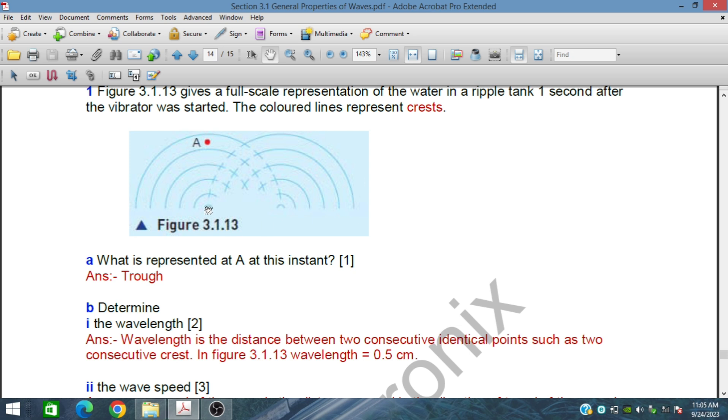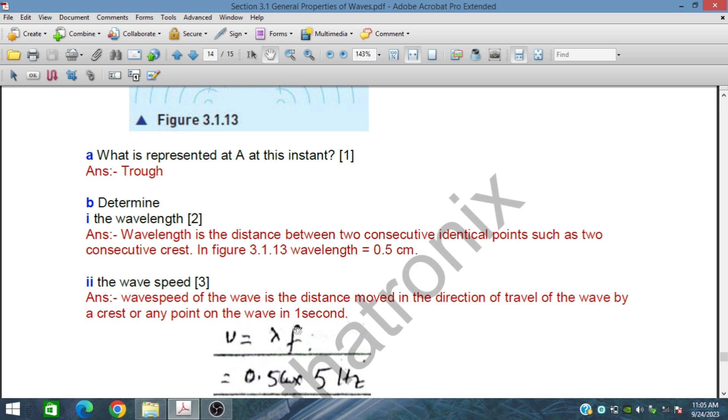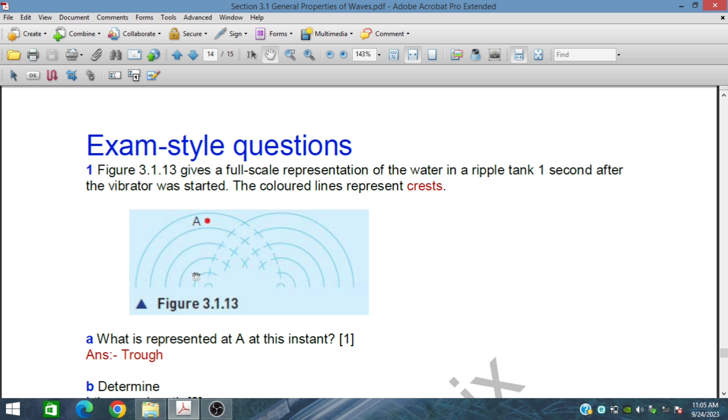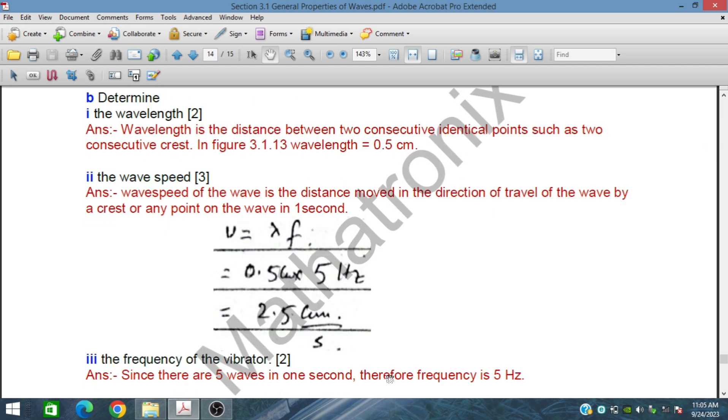Now the wave speed. Since it takes five wavelengths in one second, the speed of the wave is the distance moved in the direction of travel of the wave by a crest or any other point of the wave in one second. This is the definition of wave speed. We multiply the wavelength with frequency. In our case, wavelength is 0.5 centimeters and the frequency is 5 Hz because it takes five wavelengths in one second. When we multiply this, we get 2.5 centimeters per second.